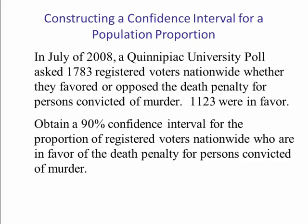We'll begin with an example. If you recall, this is the same example from the previous video where a university poll asked how many people were in favor of the death penalty. 1,123 were in favor out of 1,783. We want to obtain a 90% confidence interval for the proportion of registered voters nationwide who are in favor of the death penalty for persons convicted of murder.